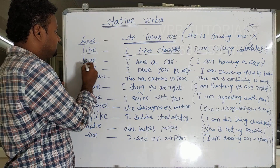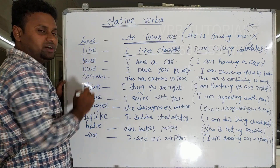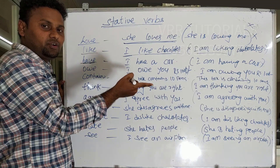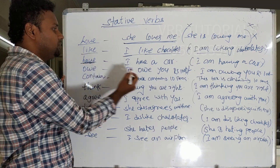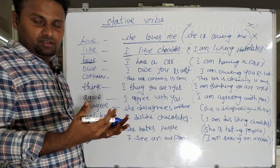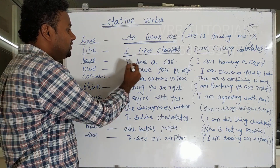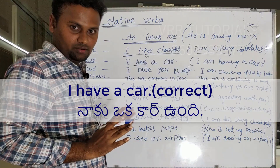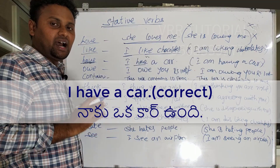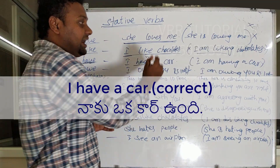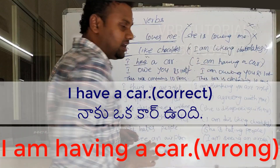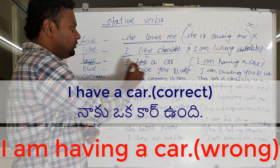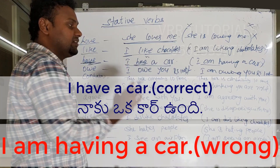Now, 'have.' The verb 'have' can function as both a stative verb and a dynamic verb. When you own something — in a possessive sense — we have to use only the V1 form. For example: I have a car. Saying 'I am having a car' is incorrect because here it is in stative mode. I have a car.